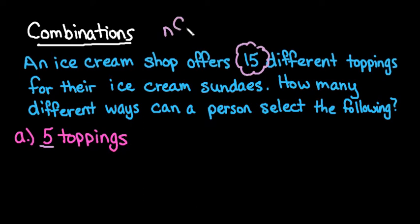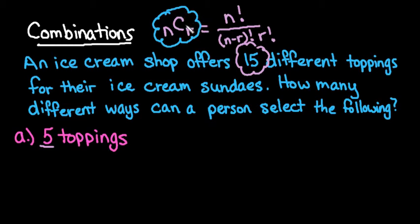If order doesn't matter, then you're going to use combinations. Remember, the formula for combinations is nCr equals n factorial over n minus r factorial times r factorial. The majority of graphing calculators have this programmed into it, and most scientific calculators also have this. If you don't want to use the formula and do hand calculations, you can find it on your calculator.